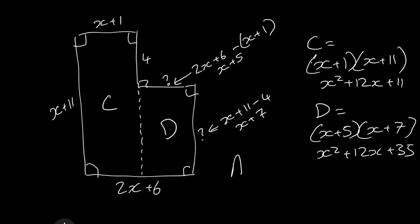And then we can work out the area of D which is x plus 5 times by x plus 7 which gives us x squared plus 12x plus 35. And then we know again that A this time is the addition of C plus D. So adding them together we get 2x squared terms. 12x plus 12x is 24x. And then 11 plus 35 is 46. So again we get the same result.